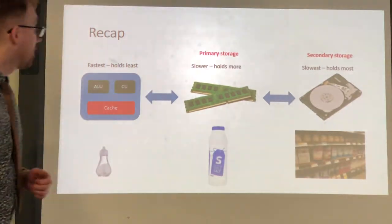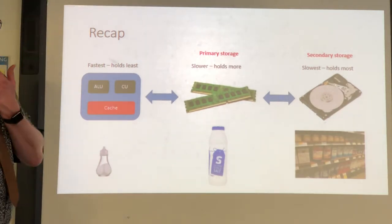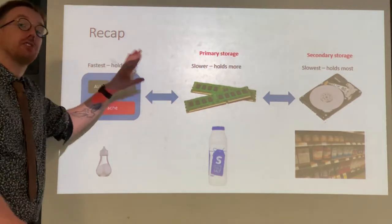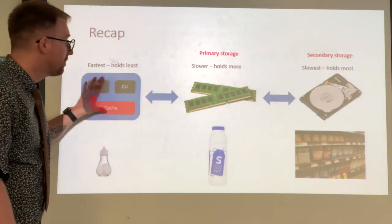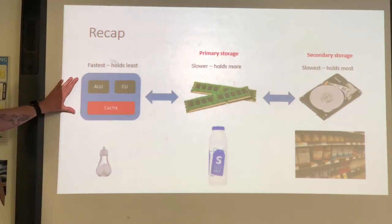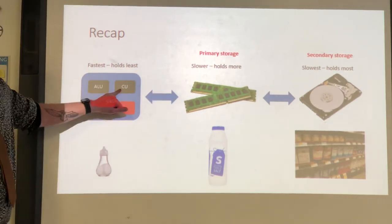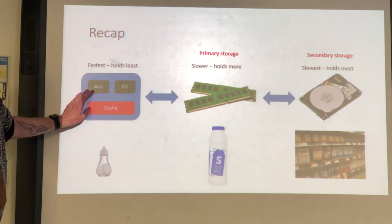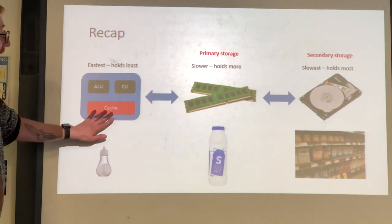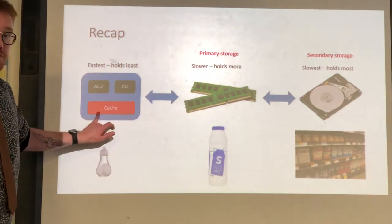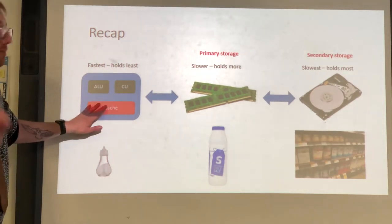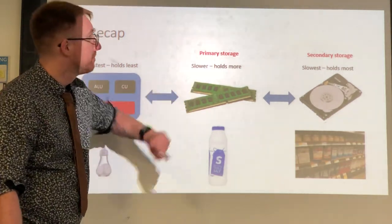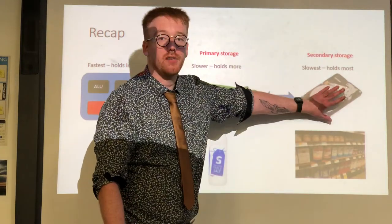Let's recap a concept from one of our previous lessons. We should be happy with the idea that we have a CPU — a central processing unit — which acts as the brain of our computer system. It's the CPU's job to fetch instructions from memory, decode them, and execute them. It does that using the control unit, which fetches instructions; the ALU, which carries out arithmetic, maths, or logic functions; and cache, which is a storage area inside the CPU. We've then got our primary storage — our main memory, our RAM — and our secondary storage, of which our hard drive is an example.